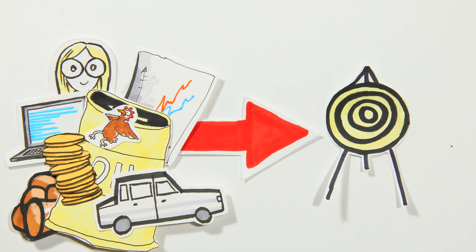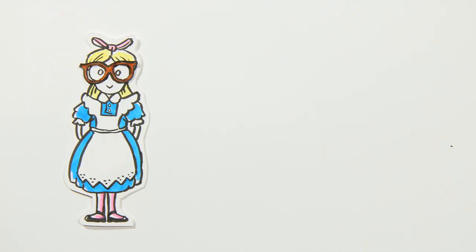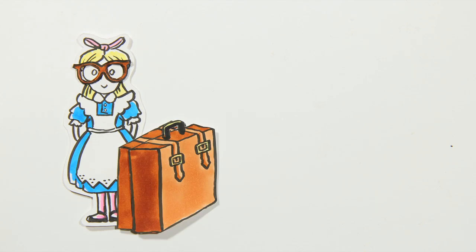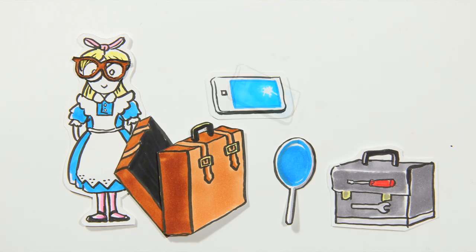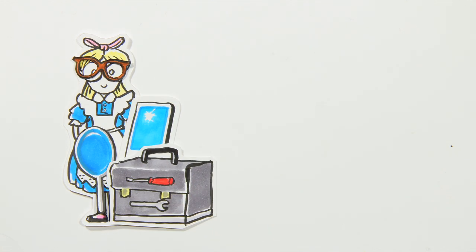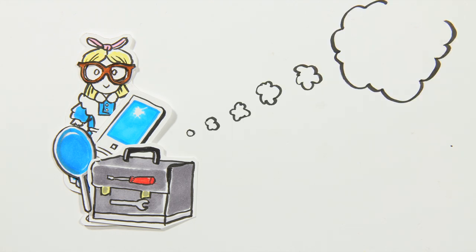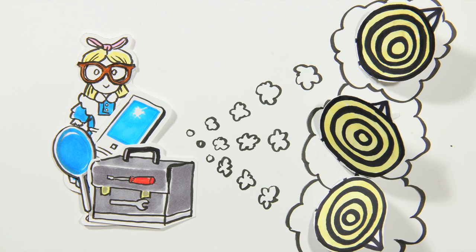By contrast, the entrepreneurial method begins with the unique means a person already has. These consist of their identity, competences and contacts. Beginning with these means, one imagines several possible goals to solve specific problems.